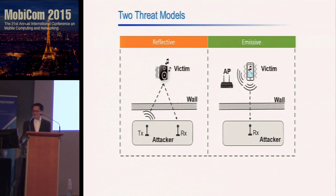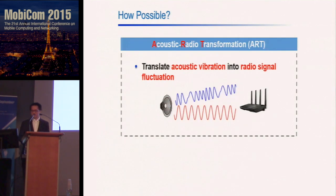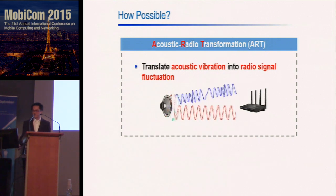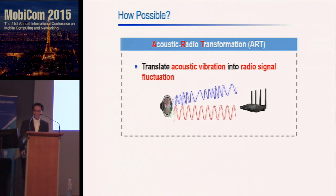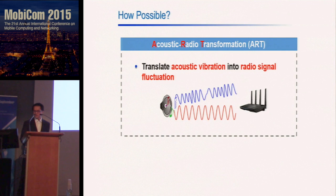You may wonder how this kind of attack is possible in practice. Sound is a mechanical wave and the wireless signal is an electromagnetic wave, but they can be related through the so-called Acoustic Radio Transformation process, or ART. Intuitively, the vibration of the loudspeaker disturbs the wireless channel and alters the amplitude and phase of the wireless signals, so the wireless signal contains signatures of the audio from the loudspeaker.